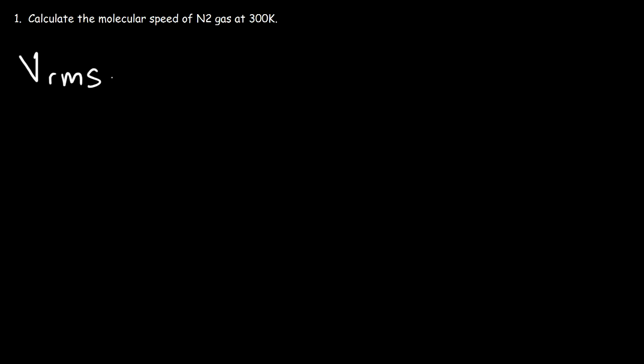So let's start with this formula. It's equal to the square root of 3kT divided by the mass. Now k is Boltzmann's constant and m is the mass of a single nitrogen gas molecule in kilograms.